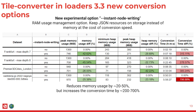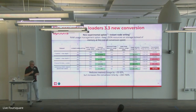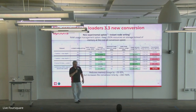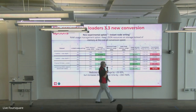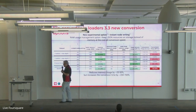Another improvement we added in 3.3 is an instant node writing option. We got feedback that some users cannot work while doing a conversion because of heavy RAM usage. So we developed a conversion option where you convert using the hard drive instead. It will be much slower, but as you can see, the RAM usage is significantly less. You can do something else with your laptop or computer, though of course you're sacrificing on conversion time. If you're not in a hurry, you can just run the converter and do something else.